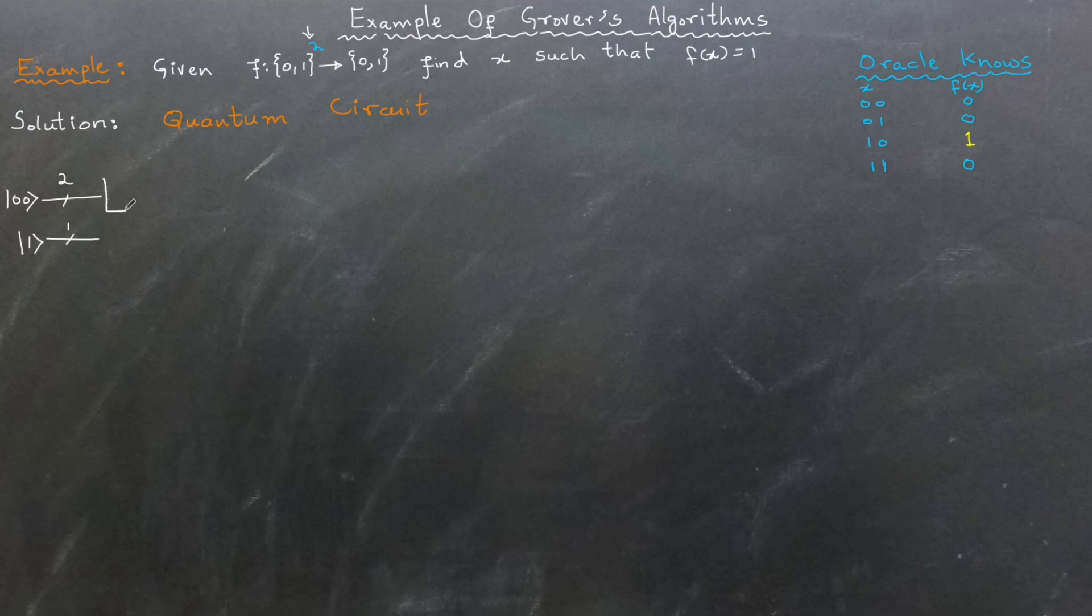The second register will always consist of one qubit, initialized to the state |1⟩. We begin by applying Hadamard gates to both registers. Next, we apply the oracle which is represented as the operator Uf.